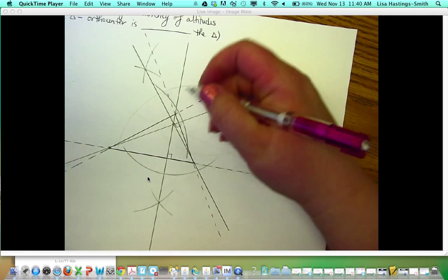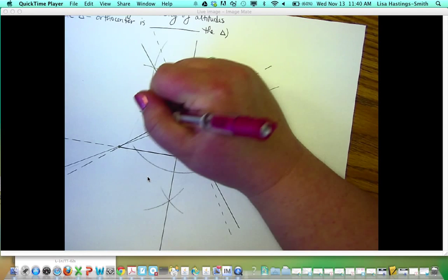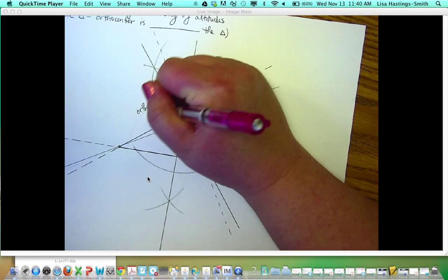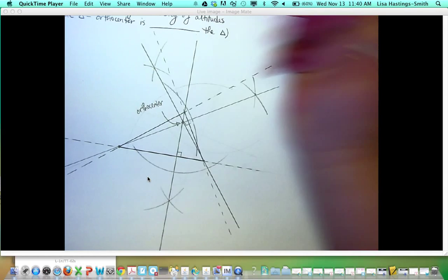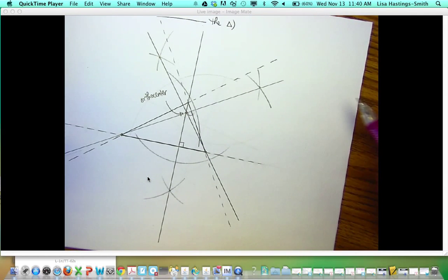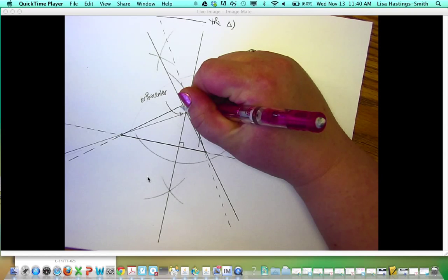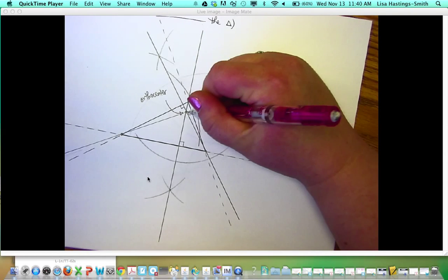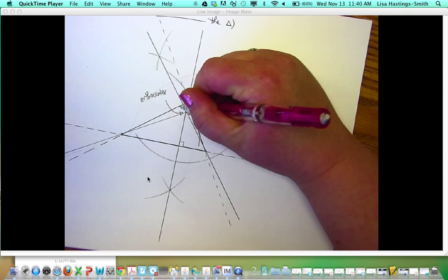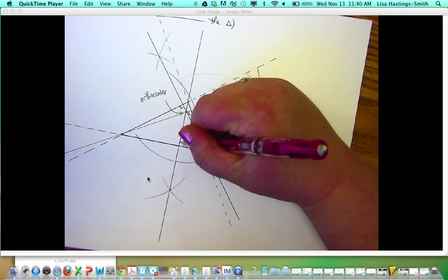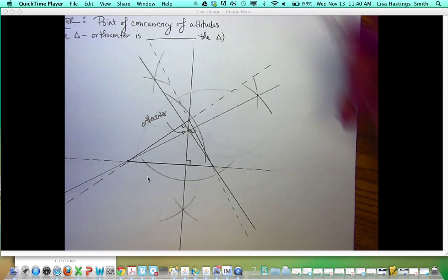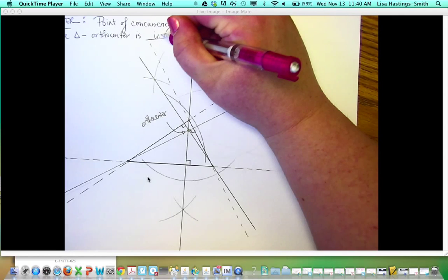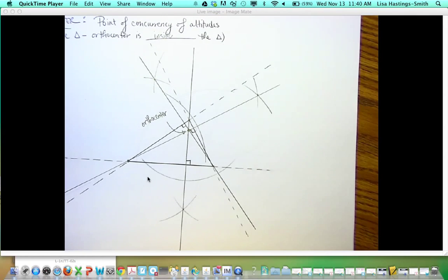Just located that point right there is the orthocenter. And I'm going to make that one perpendicular to the side there. So here's one right angle, here's the second right angle, and there's the third angle. Now for an acute triangle, the orthocenter is inside the triangle.